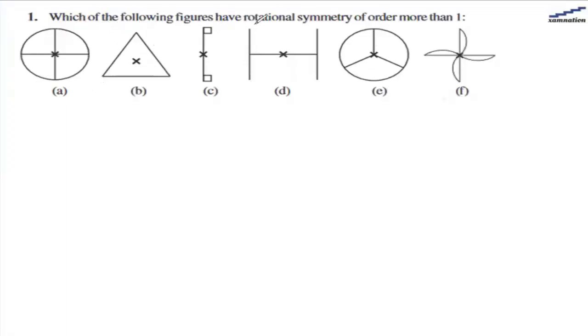We are asked to find out which of the following figures have rotational symmetry of order more than one. Let's take the first figure. We have a circle with two lines passing like this.